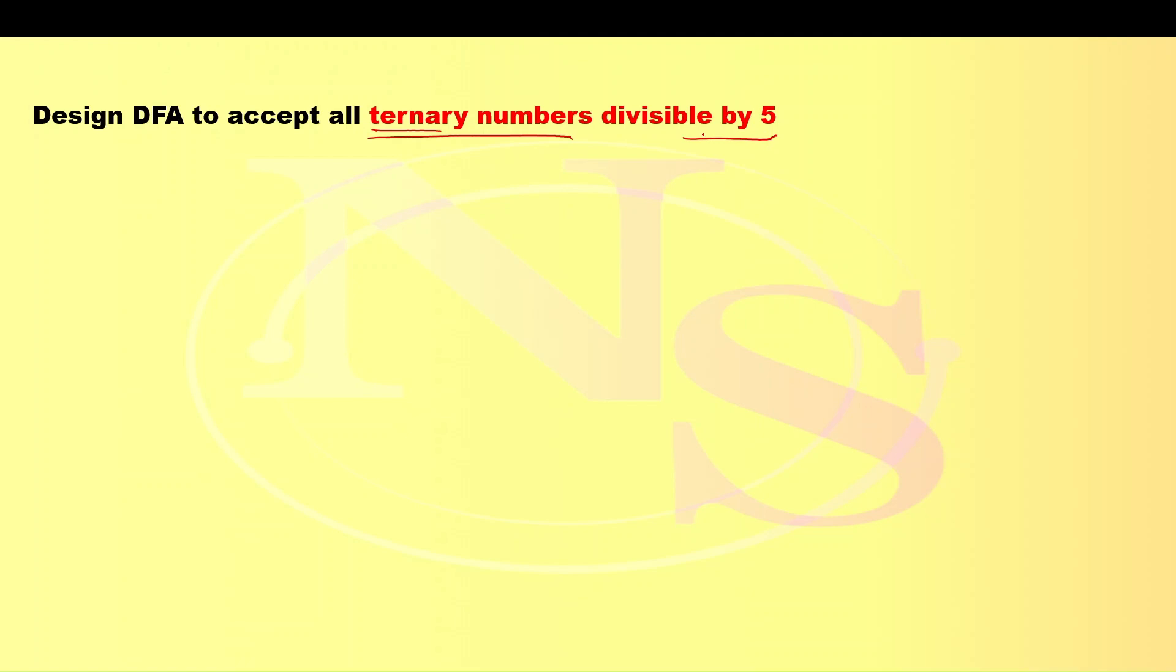How it works? Here divisible by 5 means there will be 5 states. So what are those states? If we start from Q0, then Q0, Q1, Q2, Q3, and Q4. There are 5 states as mentioned divisible by 5.